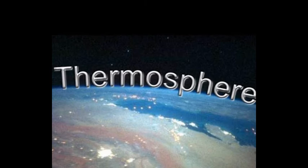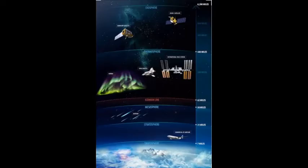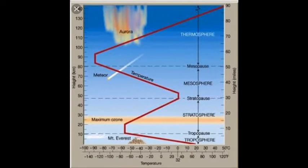The thermosphere lies above the mesosphere and is the fourth layer of the atmosphere. It extends from about 80 kilometers to about 400 kilometers above the mean sea level. In this layer, the temperature increases with increase in height.